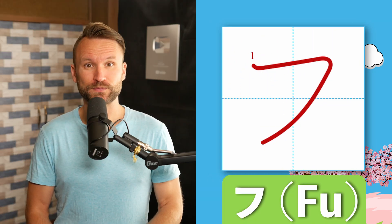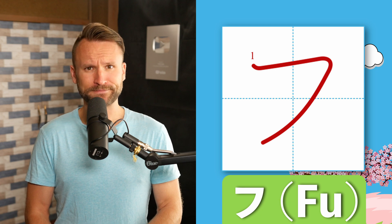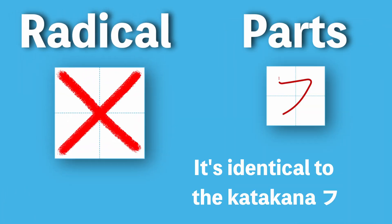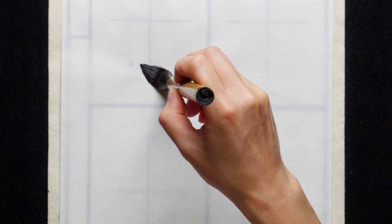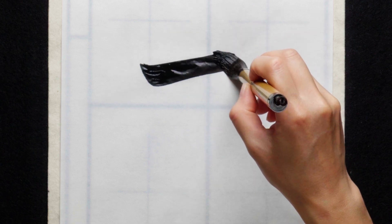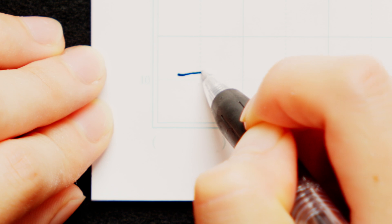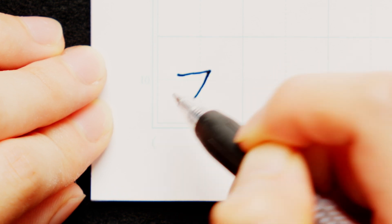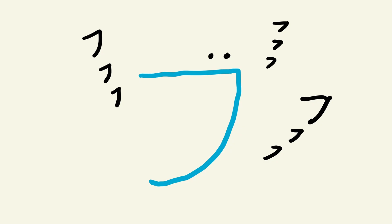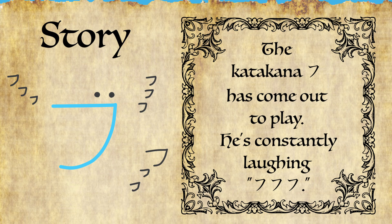Bringing us to foo, the foo part as I call it. This is not a radical at all, but instead a common part that we'll see from time to time, thus making it worth learning separately. It has one stroke that we start west to east and cut back at a sharp angle, making it look like an open mouth or half a bowl from the side. The story we'll use for this part is: the katakana fu has come out to play. He's constantly laughing.